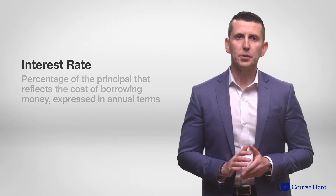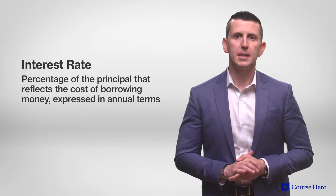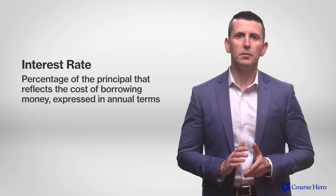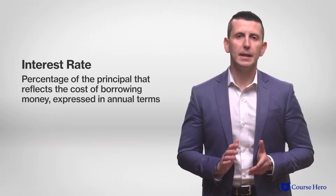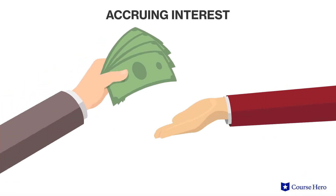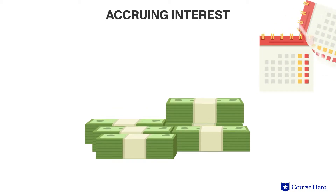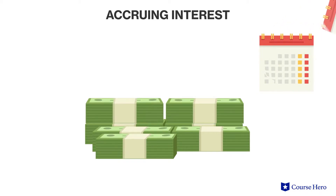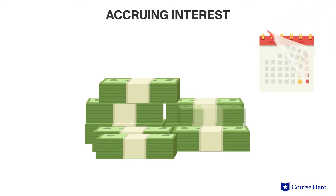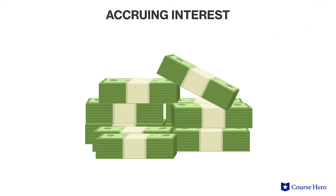The interest rate is typically stated as a percentage of the principal that reflects the cost of borrowing money, expressed in annual terms. For example, a $1,000 loan that carries a 6% stated rate of interest is expected to accrue $60 of interest each year the loan remains outstanding, or 6% of the principal amount.